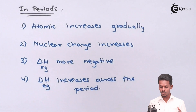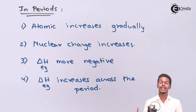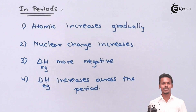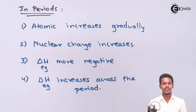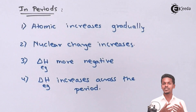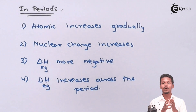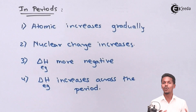Therefore we conclude that electron gain enthalpy increases across the period. As we move from left to right, atomic size decreases due to increasing nuclear charge, the attraction for the incoming electron is stronger, energy released is more, and hence the electron gain enthalpy becomes more negative.